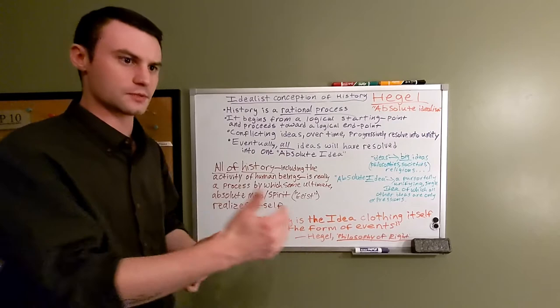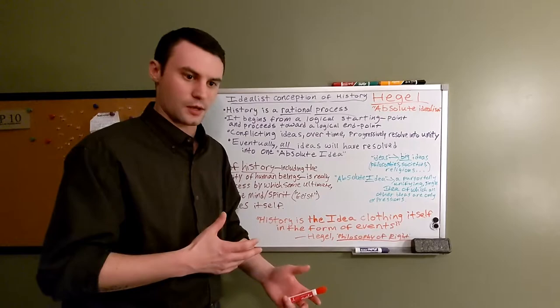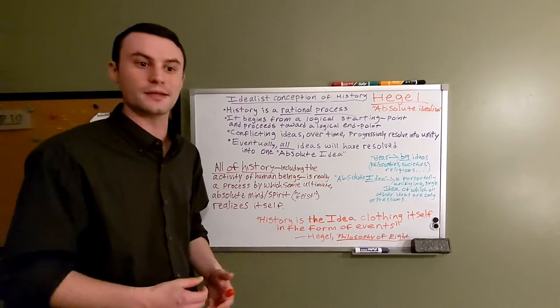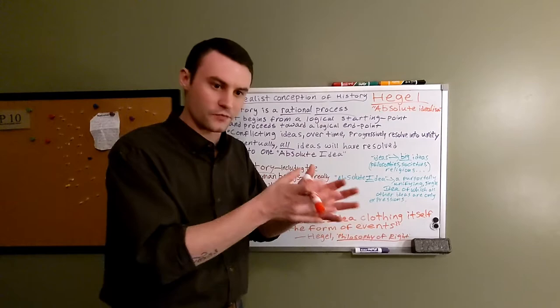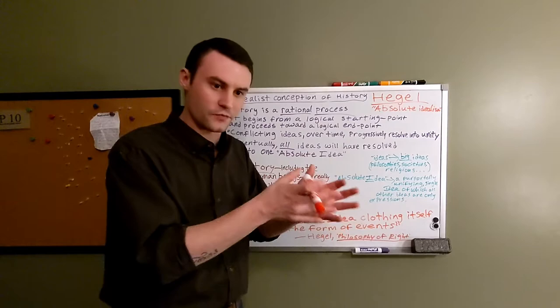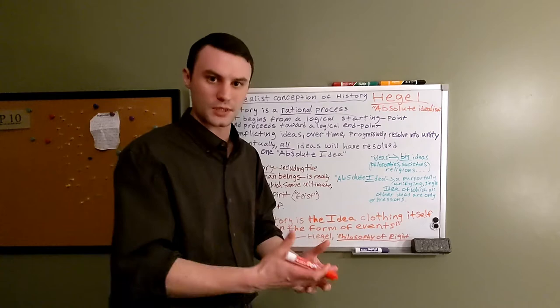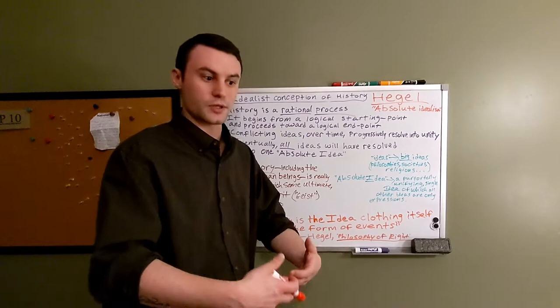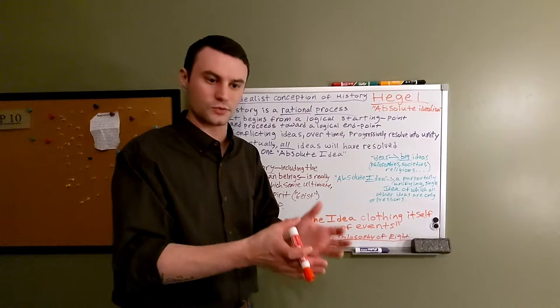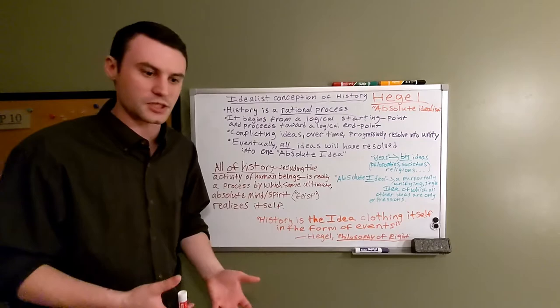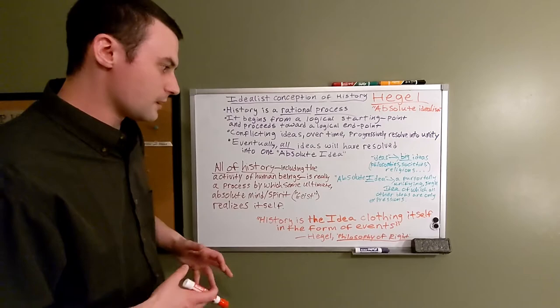These ideas clash with each other, and over time they resolve into unity, into oneness. That happens in two ways: it happens with individual clashes between a pair of ideas—a dialectic—and there will emerge a synthesis of these two opposing ideas. On the other hand, ultimately what history is driving towards is a point at which all ideas will resolve into total unity with what Hegel calls an absolute idea: one single unifying idea of which all these other ideas are instantiations, manifestations, or expressions.